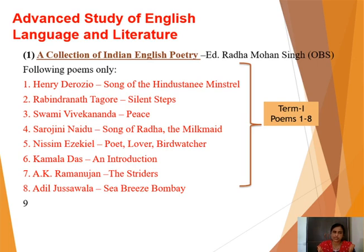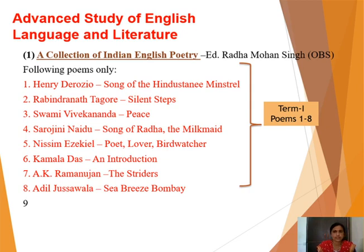Number six: Kamala Das's 'An Introduction.' Number seven: A.K. Ramanujan's 'The Strider.' And number eight: Adil Jussawalla's 'Sea Breeze, Bombay.' In all, there are eight poems prescribed for the first term.